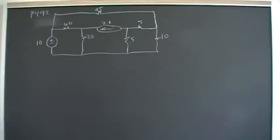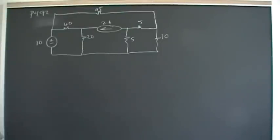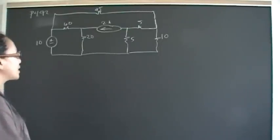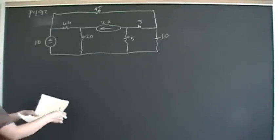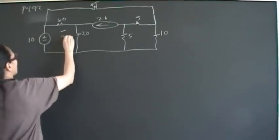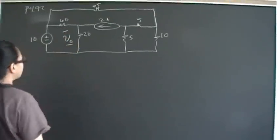Hi, YouTube. Today we are going to do problem number 92 from chapter 4, from the section on superposition. Superposition says that for a linear circuit, the voltage drop or whatever you're looking for is going to be the sum of each individual power source added together. So in other words, in this problem,